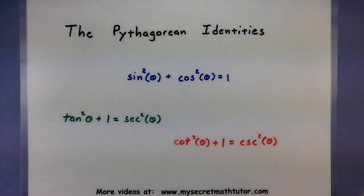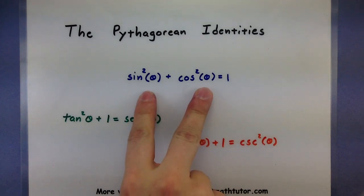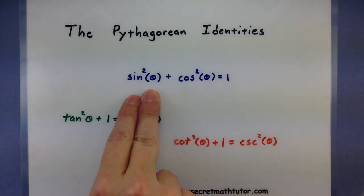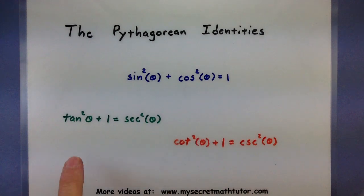So the Pythagorean identities are these three guys right here, and the first one is probably going to be the most important. You have sin²θ + cos²θ = 1, then you have tan²θ + 1 = sec²θ, and then lastly cot²θ + 1 = csc²θ.